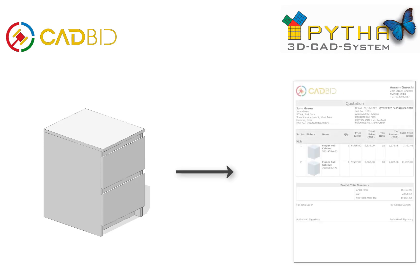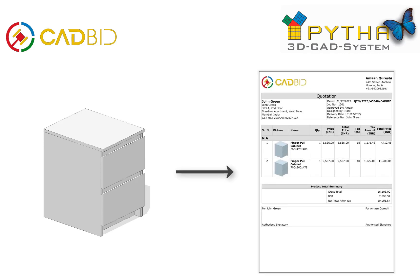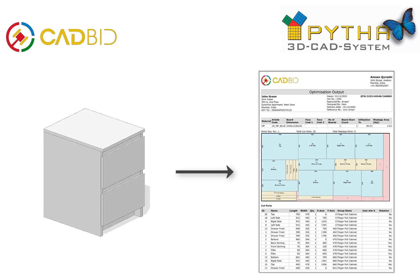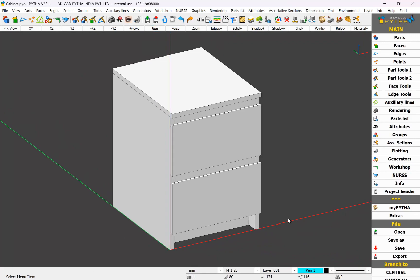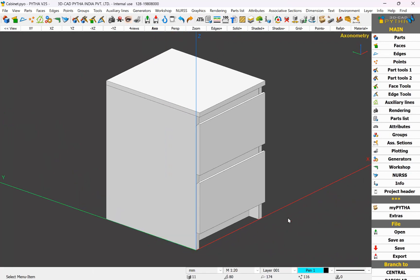We will also learn to make quotations based on groups and individual items, and at last we will learn how to optimize panels for this particular cabinet. It's going to be fun while we learn, so let's get started. This is the cabinet which you guys have learned from Paita's beginner tutorial. Now we will take it a step forward and learn how to generate a quotation from this cabinet.